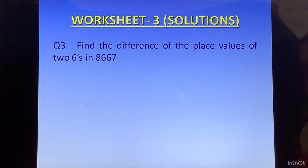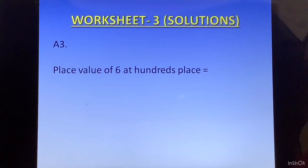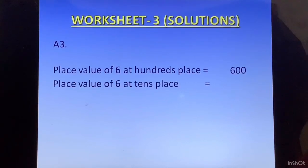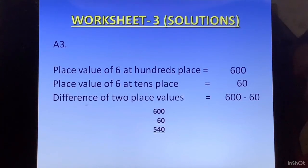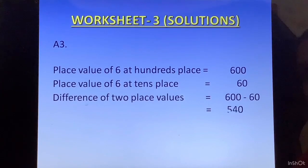Question 3: Find the difference of the place values of the two 6s in 8667. The place value of 6 at the hundreds place is 600, and the place value of 6 at the tens place is 60. The difference is 600 minus 60. You can show the calculation here or in the rough column, and write the answer as 540.